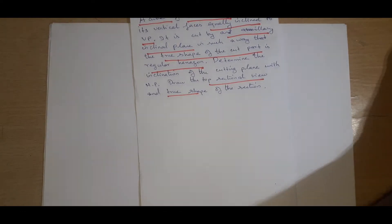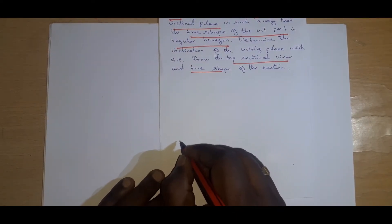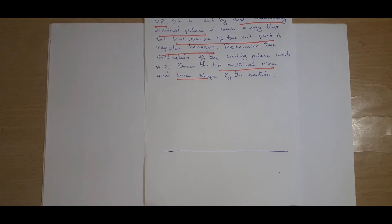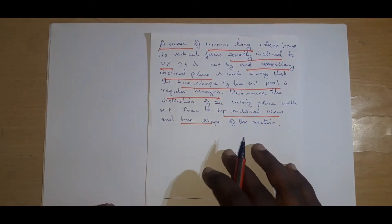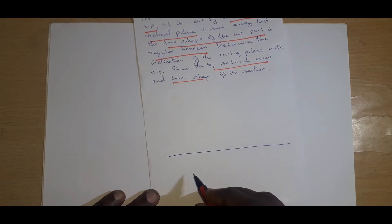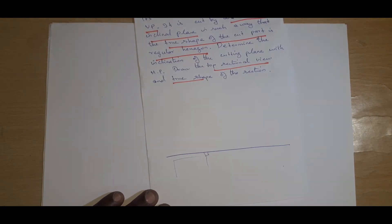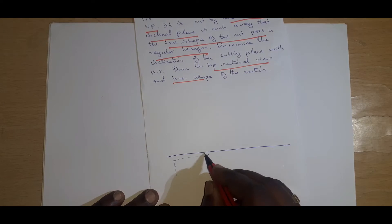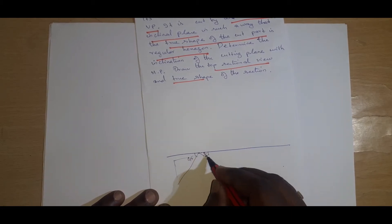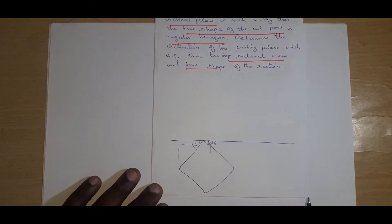Let's understand how to proceed. First, the XY line has to be drawn. The cube is simply sitting on the ground. If the two vertical faces are equally inclined, it means each face makes 45 degrees — so the two corners are at 45 degrees. You fix a point and draw 45-degree inclined lines on both edges to achieve equal inclination.